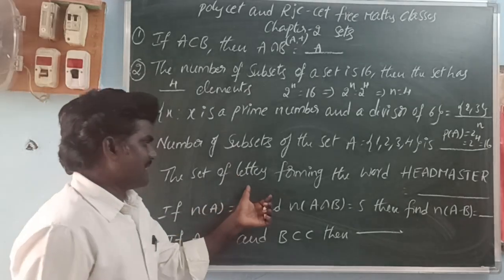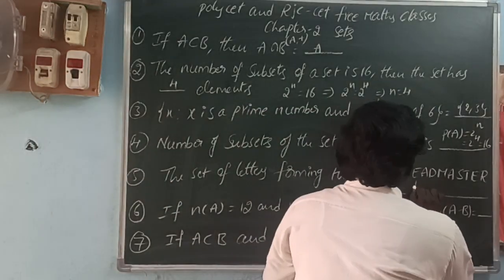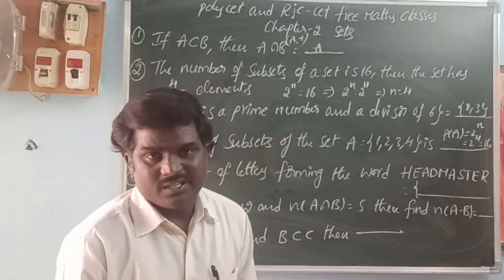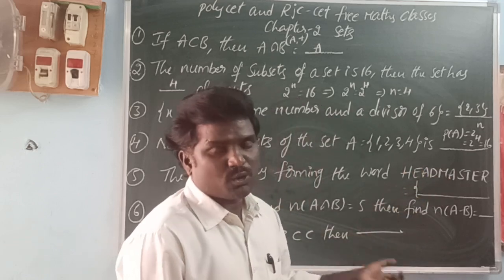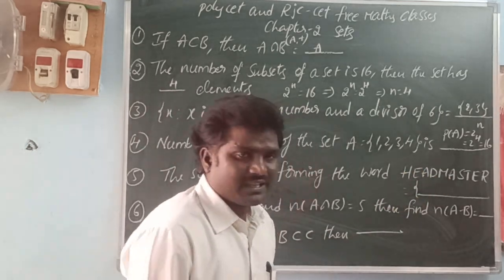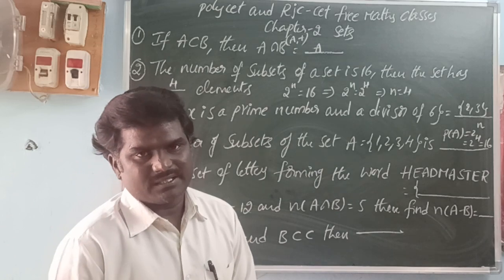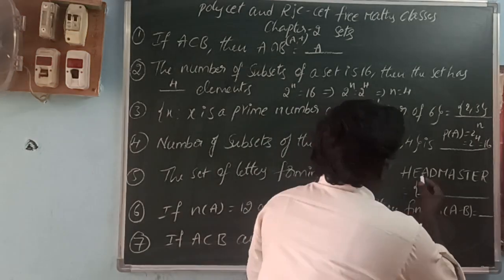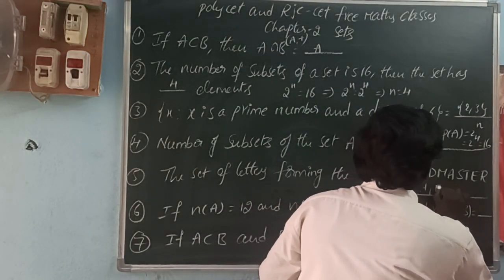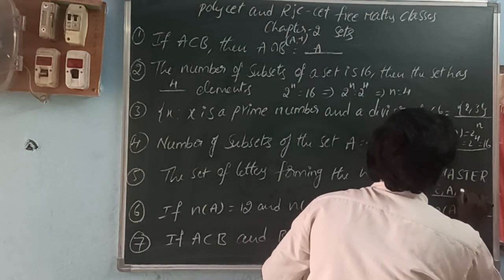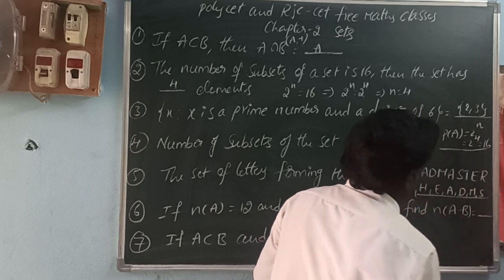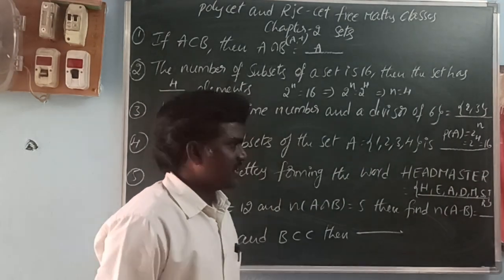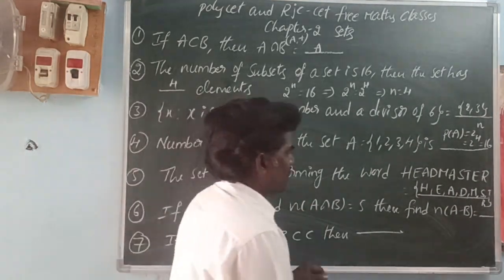Next: the set of letters forming the word HEADMASTER — they ask for the roster form. So, roster form means from the property we write the elements. Set builder form means from the elements we write the property of the set. So, the letters are H, E, A, D, M, S, T, R. Which elements are repeated? We add each only one time. Here, A and E are repeated.